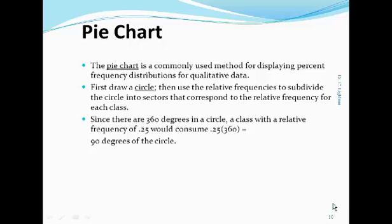Since there are 360 degrees in a circle, a class with a relative frequency of 0.25 would consume 0.25 times 360 or 90 degrees of the circle.